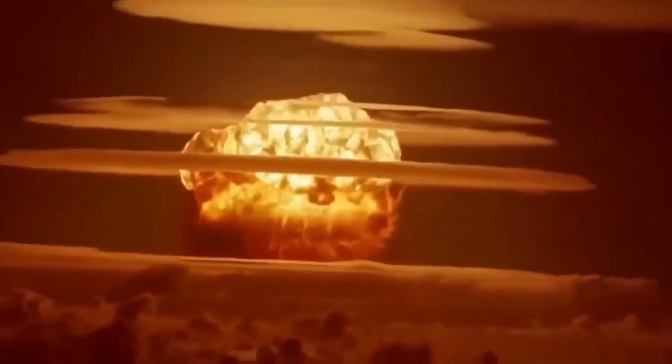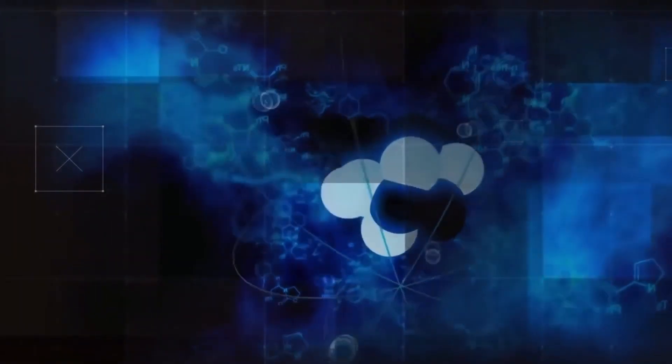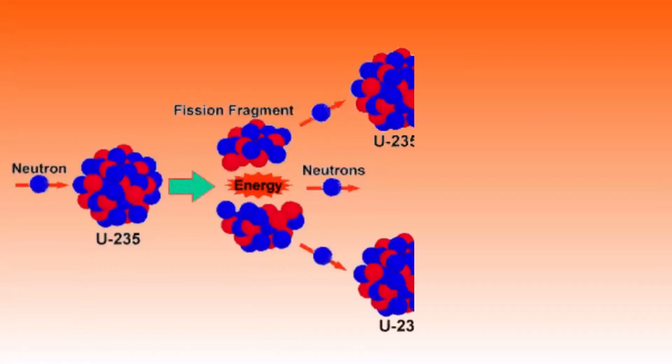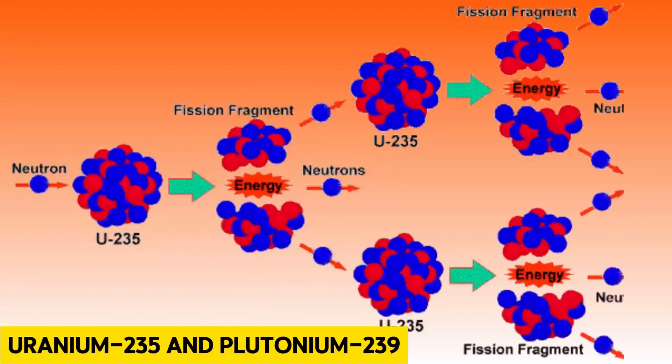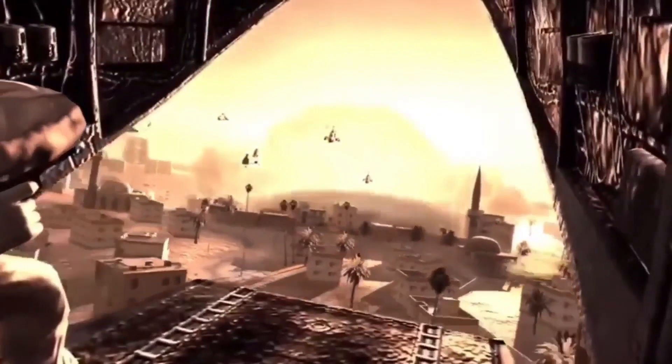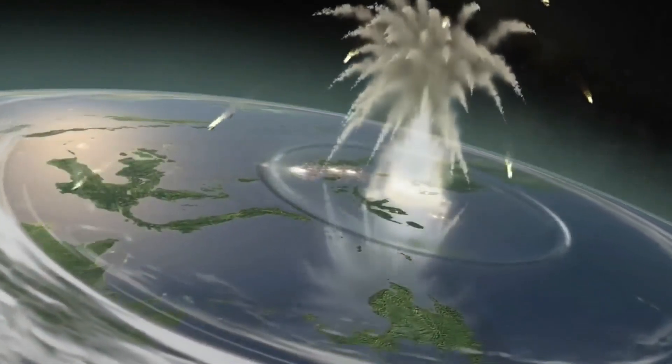An atomic bomb, also known as an A-bomb, derives its explosive force from nuclear fission — the splitting of atomic nuclei. The first atomic bombs, dropped on Hiroshima and Nagasaki during World War II, utilized fission reactions of uranium-235 and plutonium-239 isotopes to release devastating amounts of energy. The explosions leveled entire cities, instantly killing tens of thousands of people and causing long-term health effects due to radiation exposure.